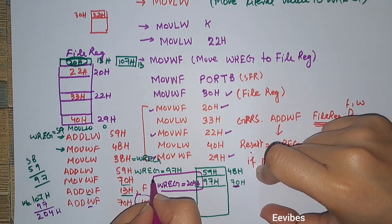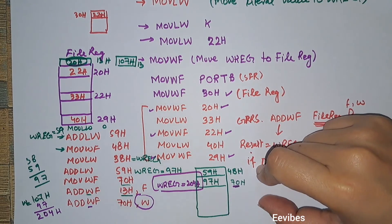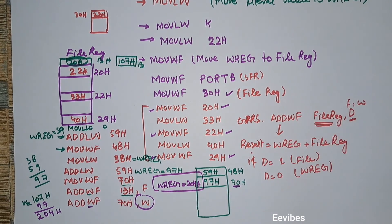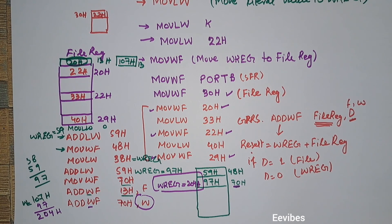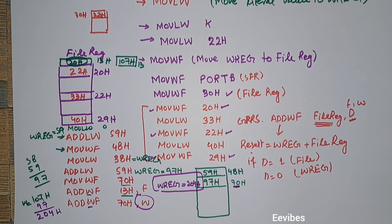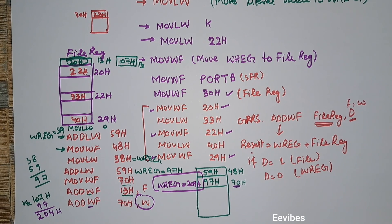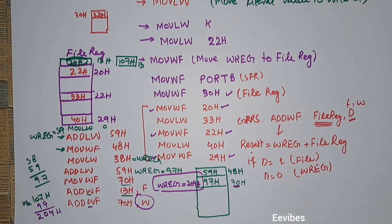In this way we use these instructions for manipulating memory and the W register. Thank you for watching — wait for the coming lectures on assembly language programming. If you have any questions, drop them in the comments. Bye!